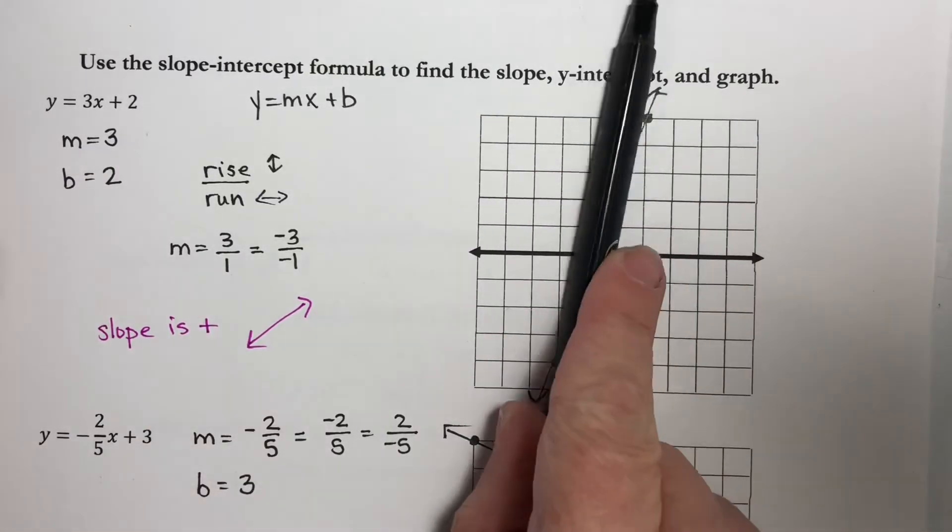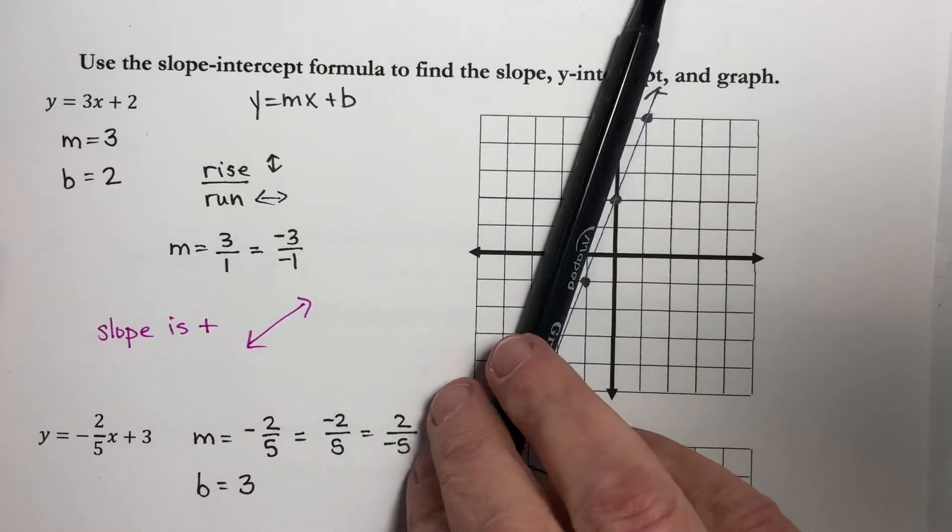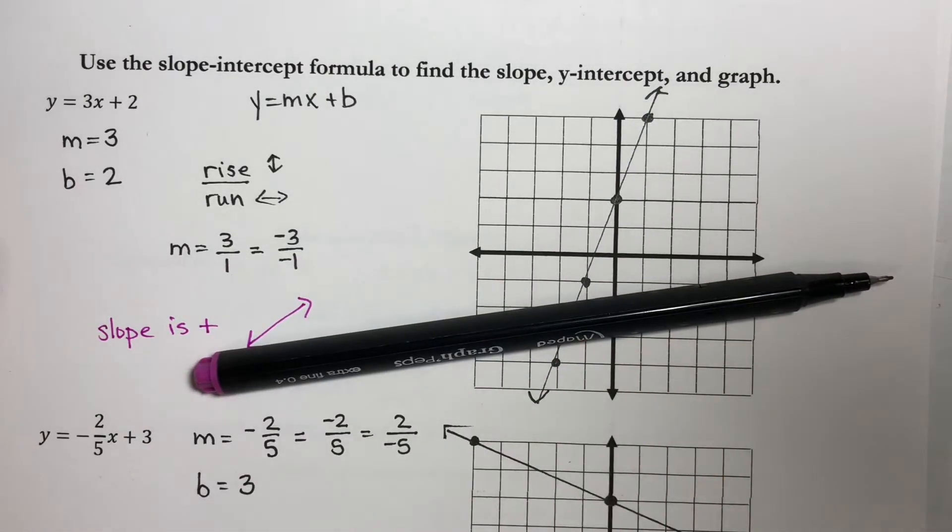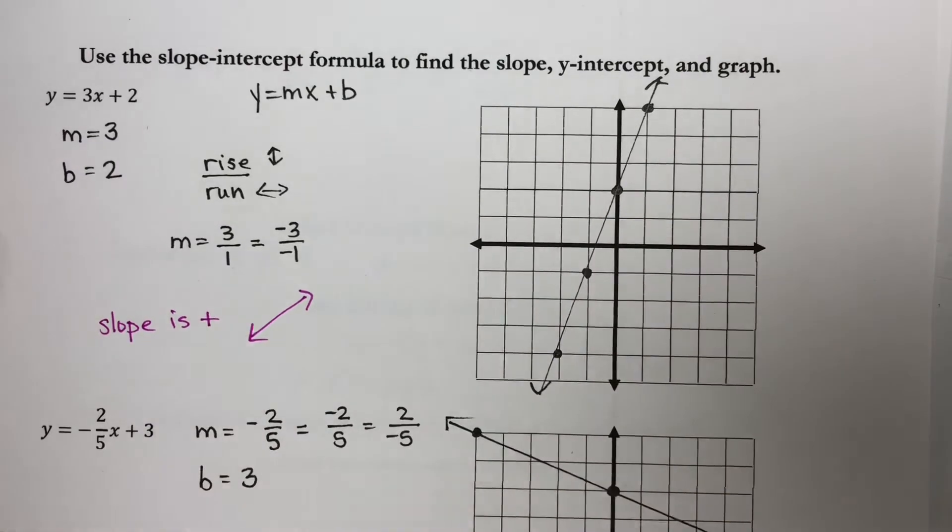The larger your number, the faster it goes up. If it's a relatively small positive number, it's going to be not going up so fast, but it will still be going up when you look at it from left to right.